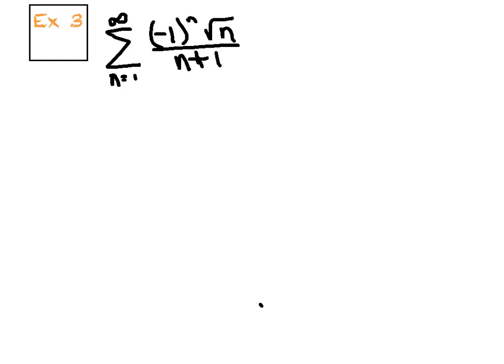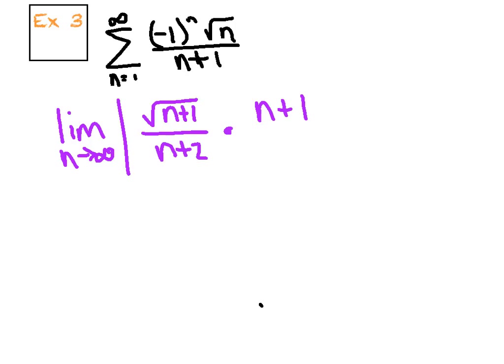Our third example has an alternating component to it. We've got (-1)^n, and the ratio test handles that quite nicely because we have these absolute value signs embedded around the ratio. Basically, that (-1)^n becomes irrelevant. We're just going to jump in and say here's the (n+1)st term times the reciprocal of the given nth term.